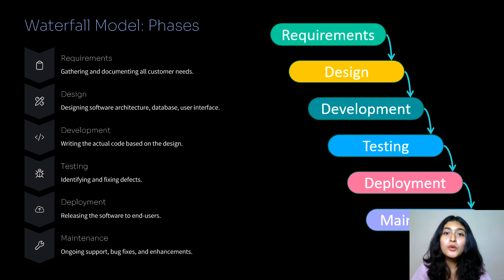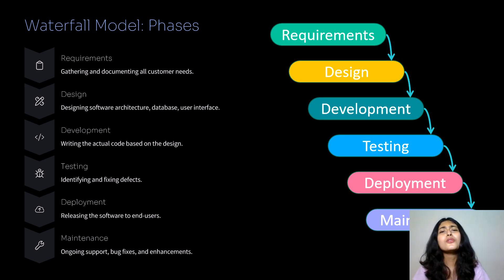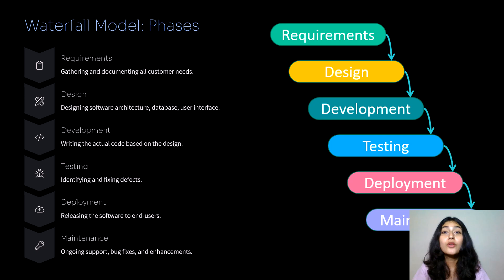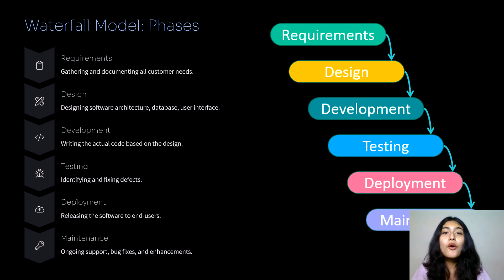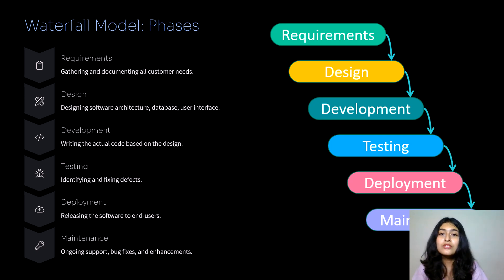Let's talk about the waterfall model. The waterfall model is the first formal model, discovered in 1970. It is also called the traditional model and is one of the oldest models. It is a linear or sequential model and follows a top-down approach. There are six phases in this model.